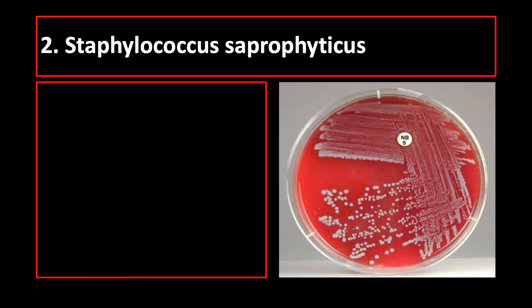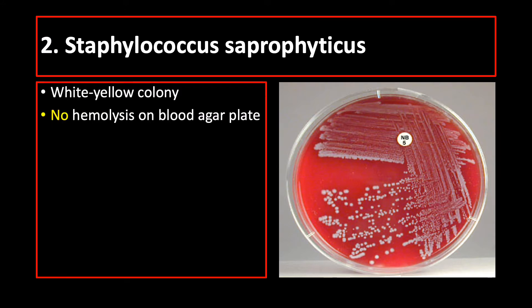Next is Staphylococcus saprophyticus, which produces white-yellow colony, no hemolysis on blood agar plate, and is novobiocin resistant. Look at the novobiocin antibiotic disc — there is no zone of inhibition, which means that the bacteria is resistant to the antibiotic novobiocin.